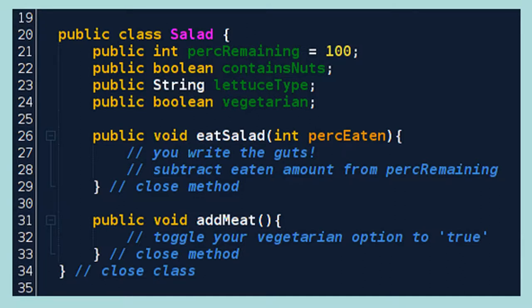And your salad could have wheat, boolean contained nuts, lettuce type, whether or not it's vegetarian. Anyone give that a shot? I just wanted to turn it in here. Great. What were your new objects?